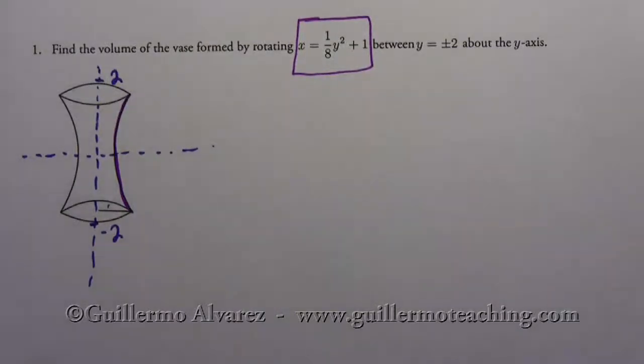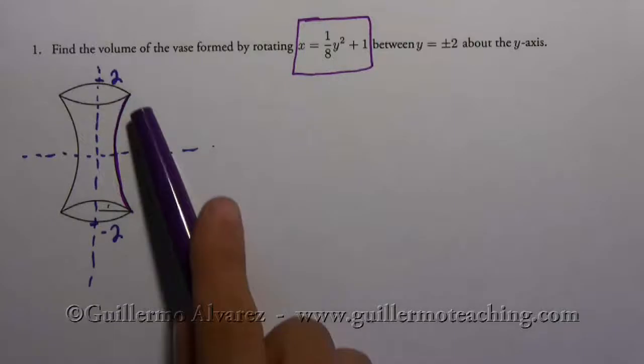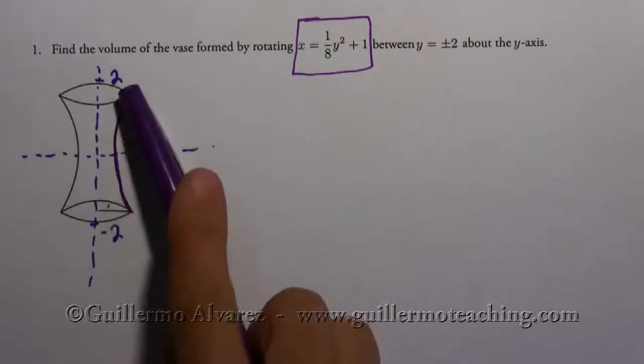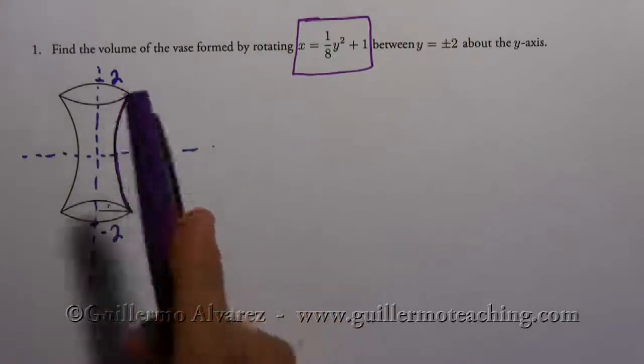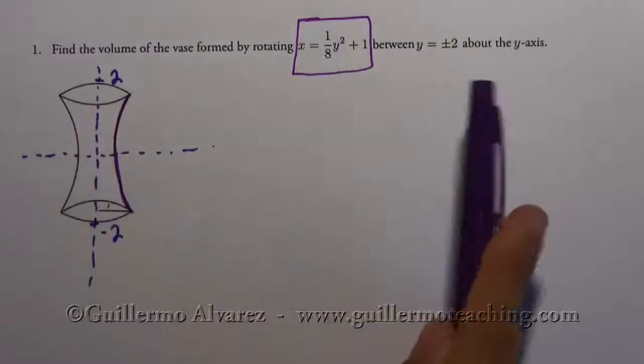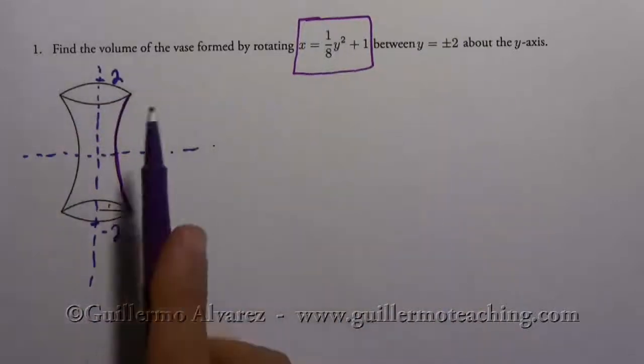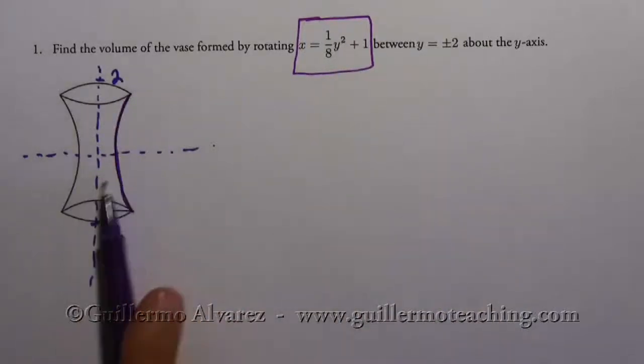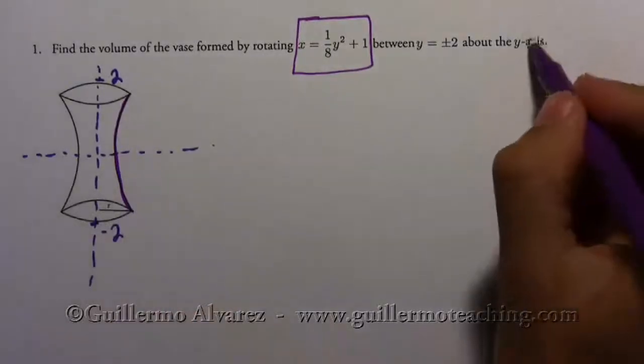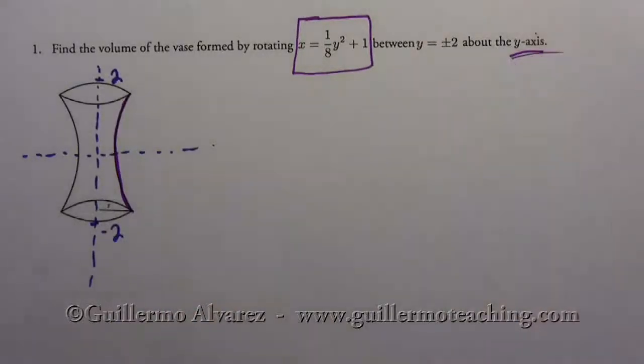And so if I rotate this surface right here about the y-axis, so I'm going to rotate it around. What I end up with is something that looks like a nice little vase that you might buy at the store.